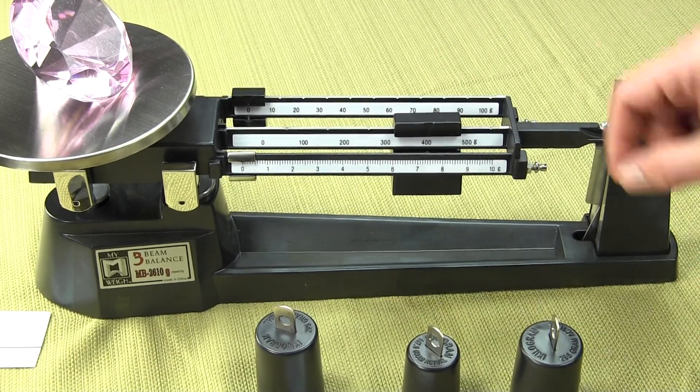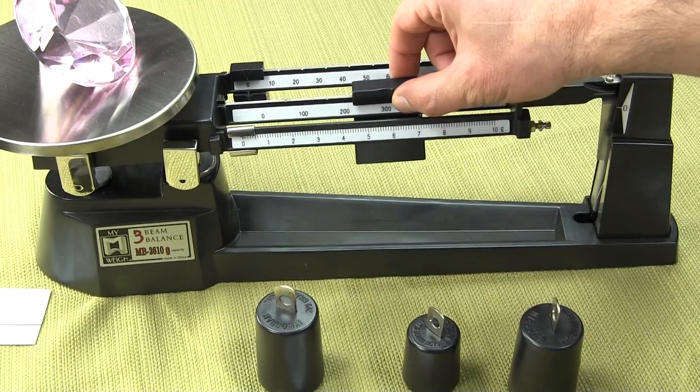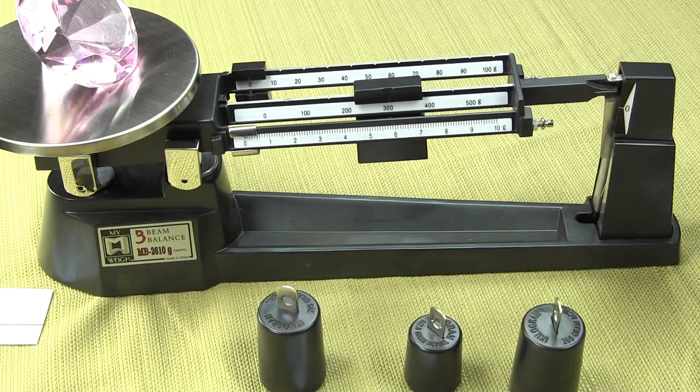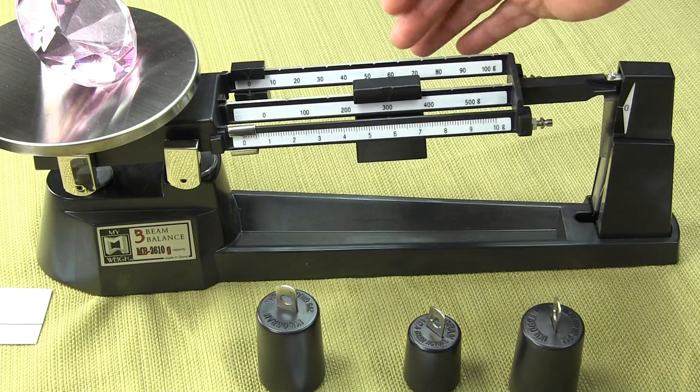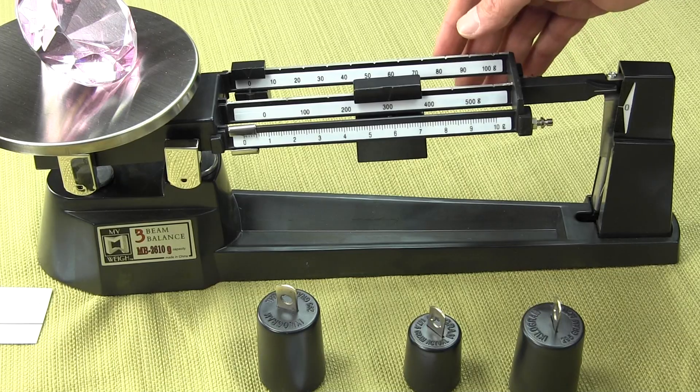We want to slide it back one and it's still too heavy. Slide it back to the 300 gram, and now the poise or the beam is up in the air. So we know that this is greater than 300 grams but less than 400.